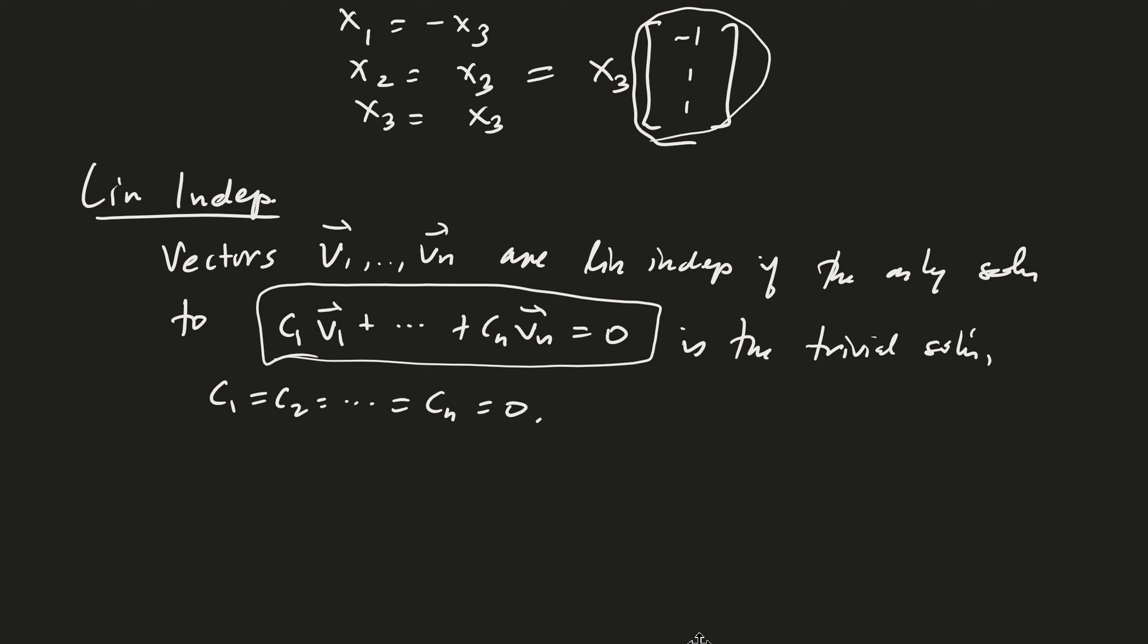However, if the v i are each in rn, let's go ahead and take the full set. Then x, if we define x to be the matrix using these column vectors, then the columns are linearly independent when x is invertible.